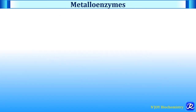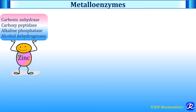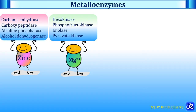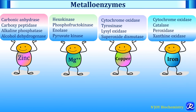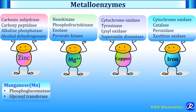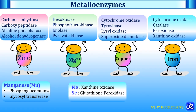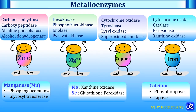Zinc-containing metalloenzymes are carbonic anhydrase, carboxypeptidase, alkaline phosphatase, and alcohol dehydrogenase. Magnesium-containing metalloenzymes are hexokinase, phosphofructokinase, enolase, and pyruvate kinase. Copper-containing metalloenzymes are cytochrome oxidase, tyrosinase, lysyl oxidase, and superoxide dismutase. Iron-containing metalloenzymes are cytochrome oxidase, catalase, peroxidase, and xanthine oxidase. Phosphoglucomutase and glycosyltransferase contain manganese. Xanthine oxidase contains molybdenum and glutathione peroxidase contains selenium. Calcium-containing metalloenzymes are phospholipase and lipase. This is very important for brief answer questions — enumerate enzymes containing zinc, magnesium, copper, or iron.